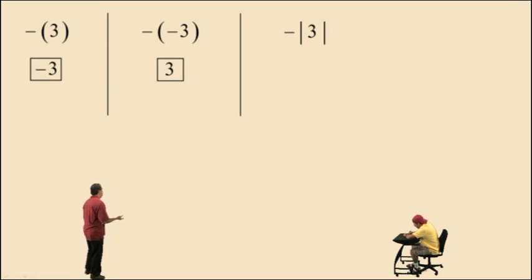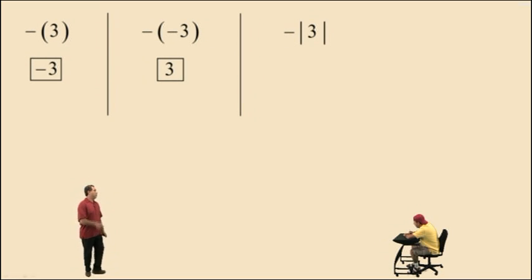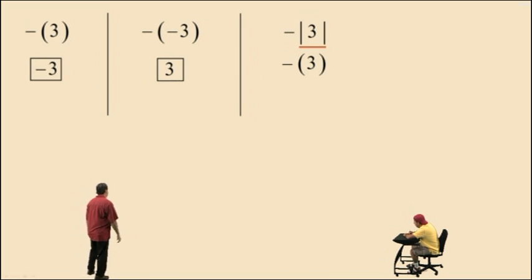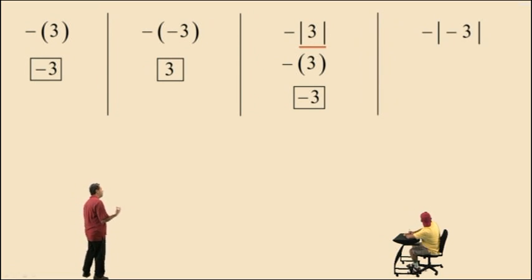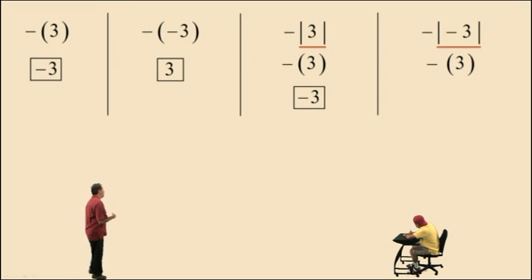Here we have the opposite of the absolute value of 3. Remember, order of operations says you must perform parentheses and other grouping symbols first. So we evaluate the absolute value of positive 3 first — that is 3 — and then the opposite of positive 3 is negative 3. Similarly, the opposite of the absolute value of negative 3: the absolute value of negative 3 is positive 3, and then the opposite of positive 3 is negative 3.